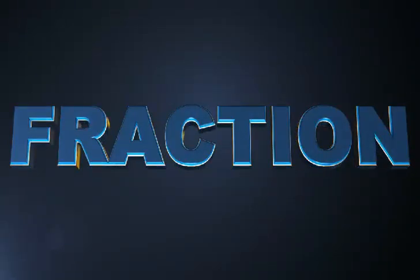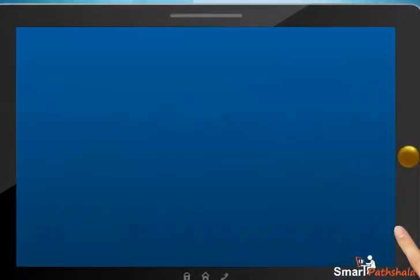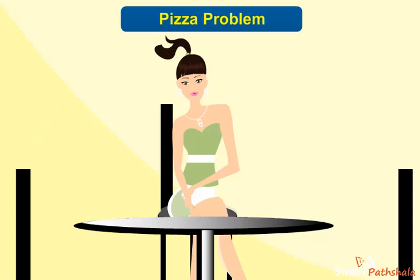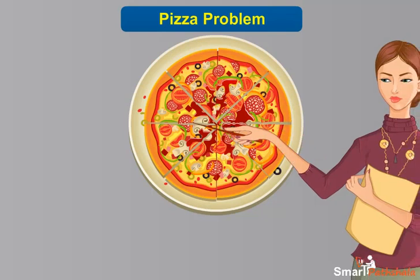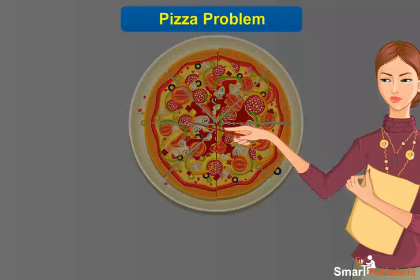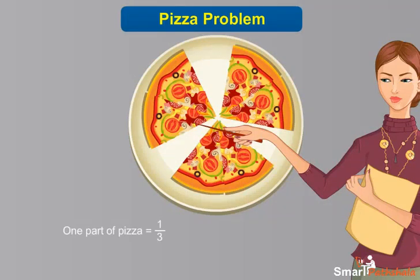This module will explain the basics of fractions. One day Swati ordered a pizza. She was joined by two more friends, Sarla and Mahima. They decided to share the pizza equally. So if we divide the pizza in the way shown here, each of them gets an equal share of the pizza. Thus, one pizza is divided into three parts and each one of them gets a part out of three.